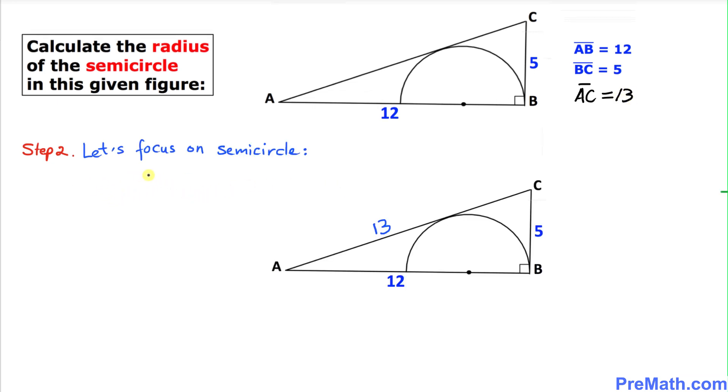Now our next step: we are going to focus on this semicircle. Let's call this the center of the semicircle, M. If you look at this side AC, this is a tangent line on this semicircle. Let's call this point N where it's touching this circle. Now let's connect these two points M and N, and that is going to be our radius R.